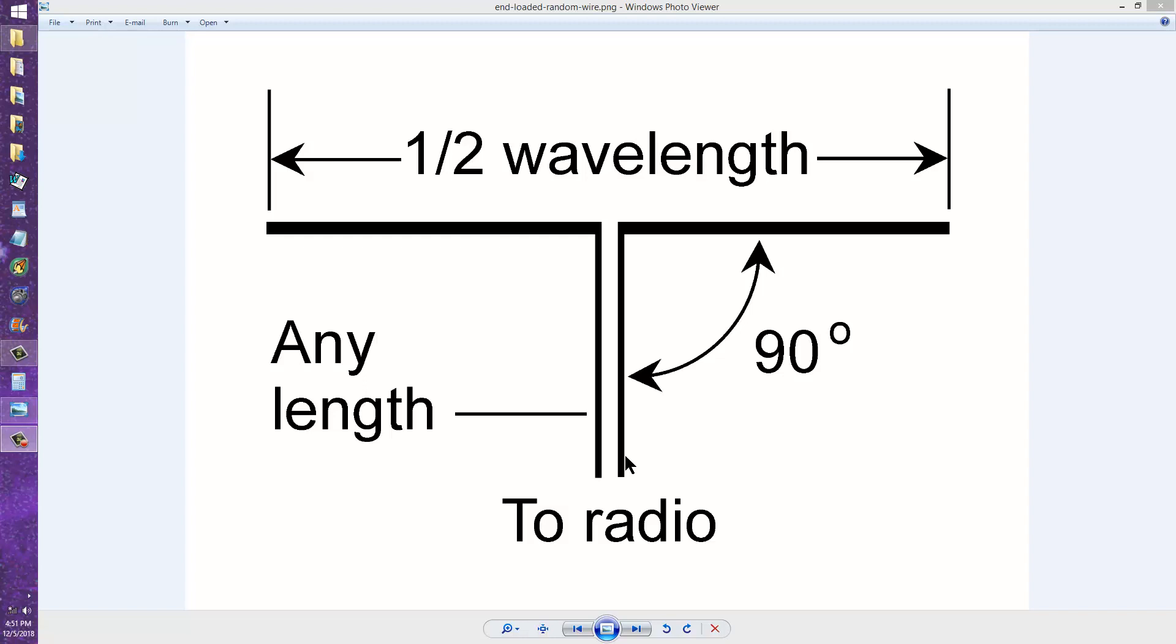In any case, you have now a random wire antenna, but at the end of the antenna, it points and spreads off in two different directions.